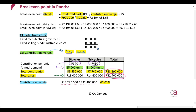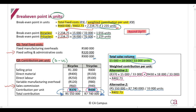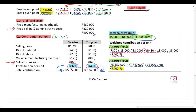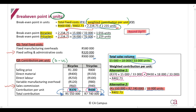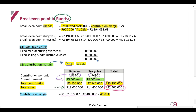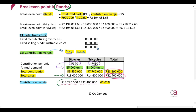An easy way to remember: when calculating the break-even point in units, you take total contribution and divide by expected sales in units. When calculating the break-even point in rands, you still take total contribution but divide by the rand value of expected sales instead of units. That's the key difference between the two calculations.